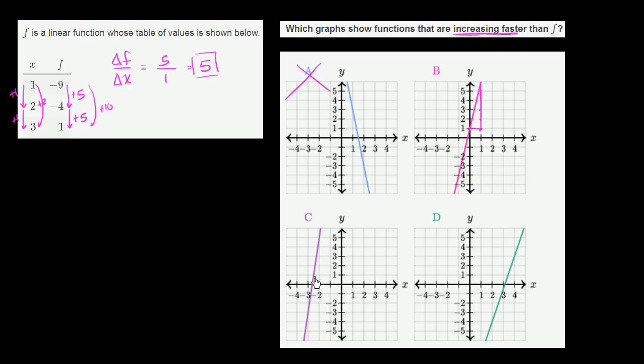Now let's look at c. I'm going to try to find a point where it looks like I have an integer point right over here. So that's the point negative 3 comma negative 3. And if I move 1 in the x direction, it looks like I'm increasing by more than 5. I'm increasing by about 8. So this one looks like it has a slope of 8. So this one is increasing faster than f. We'll circle that.